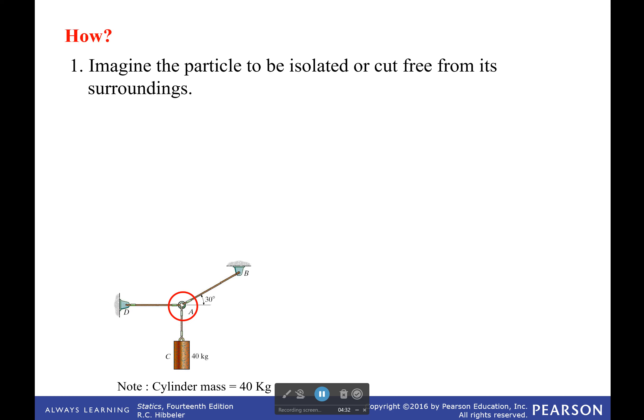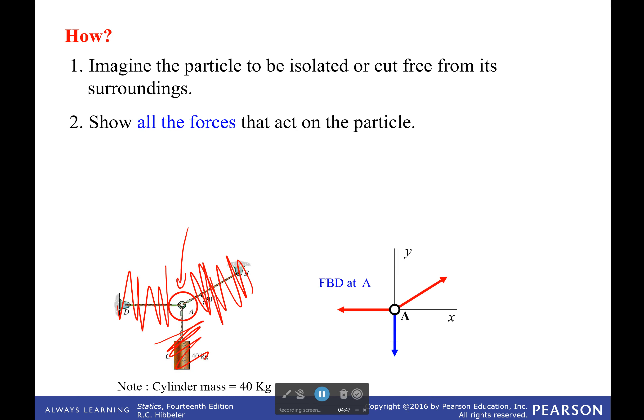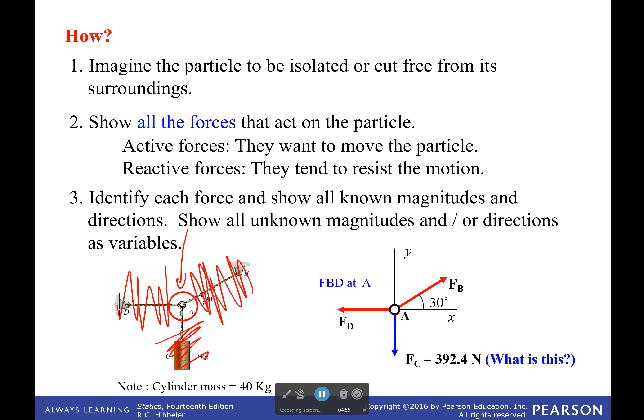So in this case, we care about point A, and so we drew a circle around point A. And everything outside of that circle just disappears. It no longer exists. But we can't just get rid of it. We have to replace it with a force. So every single rope I cut, I replaced with a force. I didn't have to name those forces to make it a little bit easier on myself.